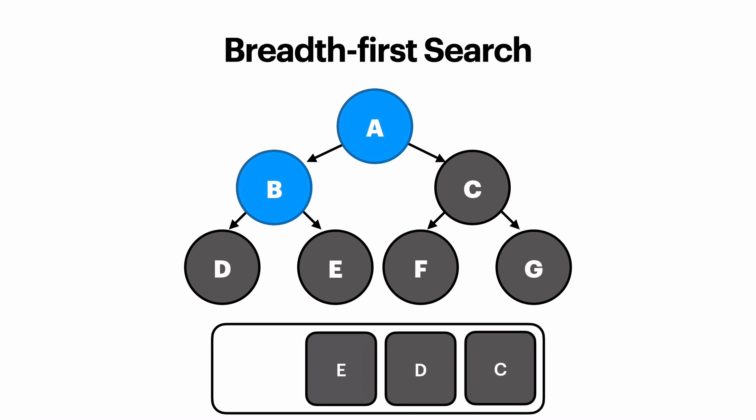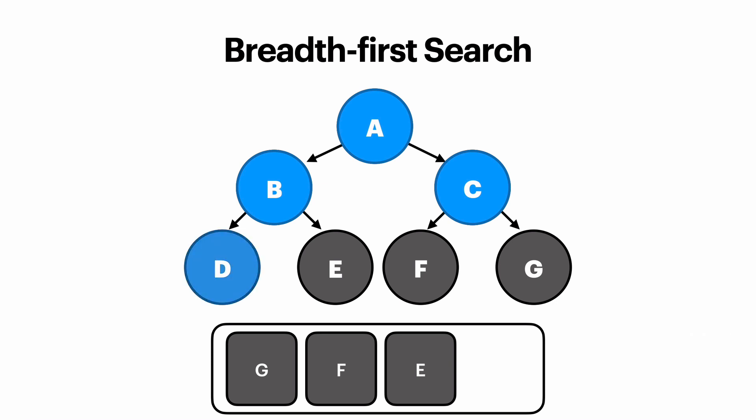So now our queue has three items on it, so we loop again and we're going to pop C off the queue. We're going to visit C and we're going to add C's children to the queue. Once again, pop the top of the queue off and we're going to visit that node, which is D. D has no children, so we don't add any more items to our queue.